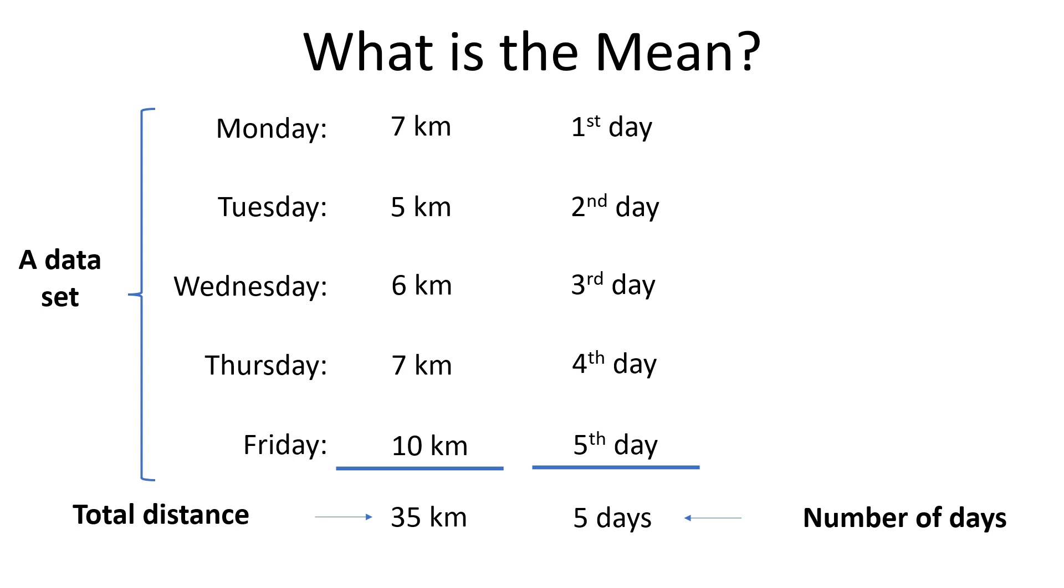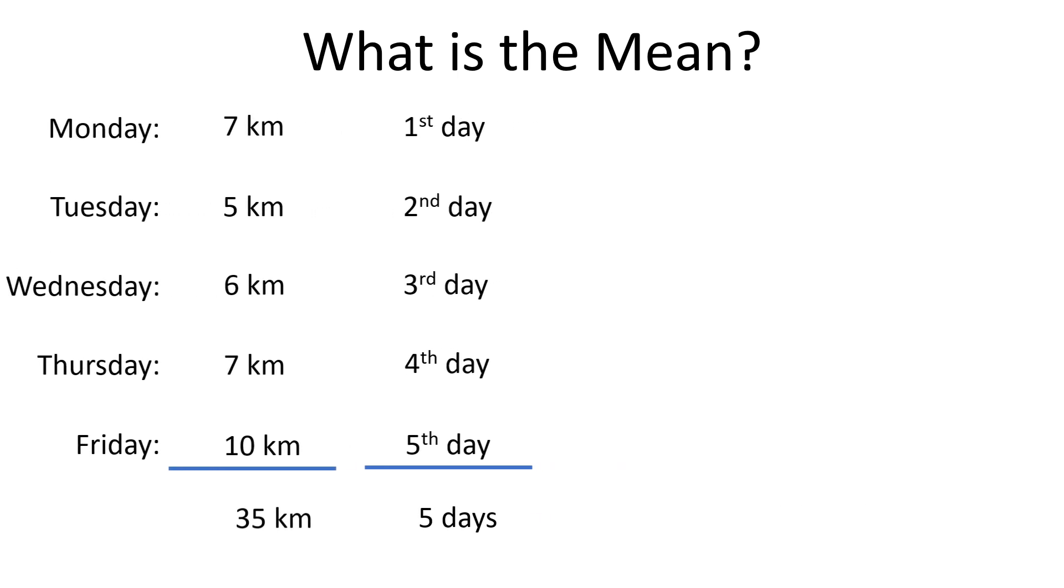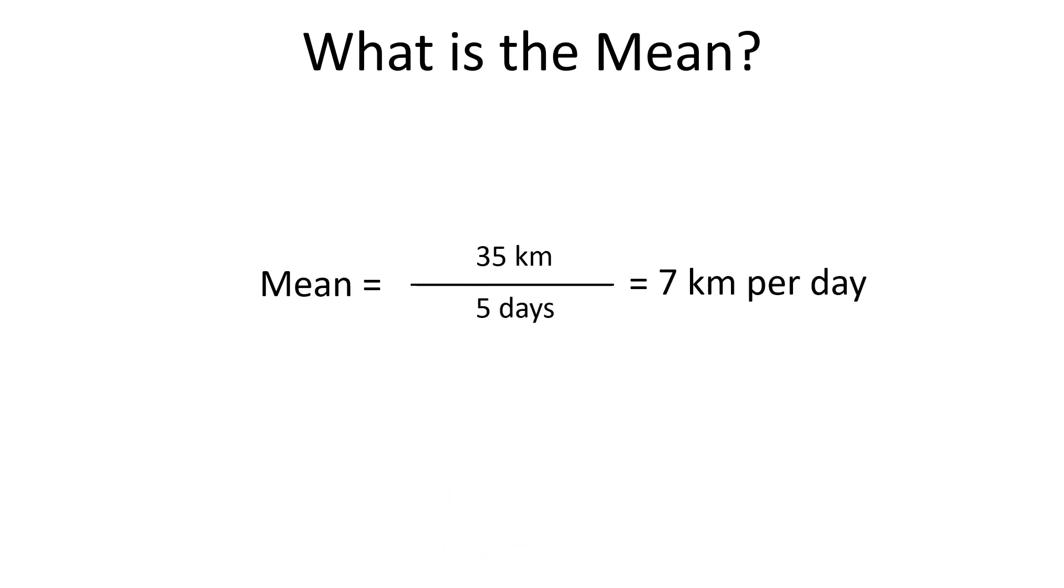Hence, to calculate the mean in our example, we need to take the total distance of 35 kilometers and divide that by the number of days, which in our example is 5. So, we have 35 kilometers over 5 days and that is equal to 7 kilometers per day.